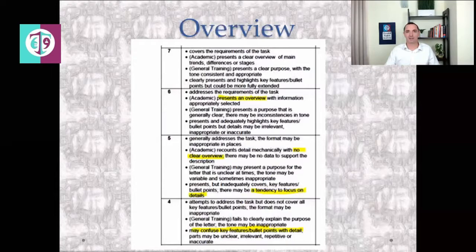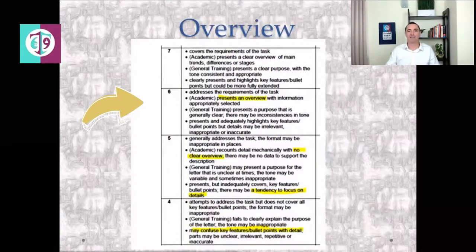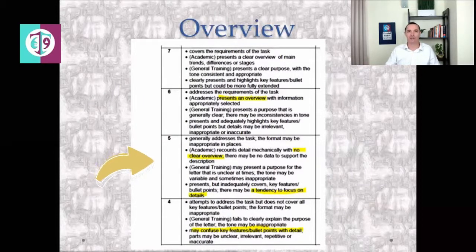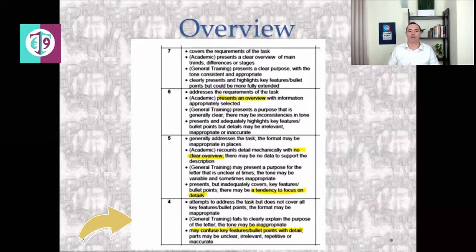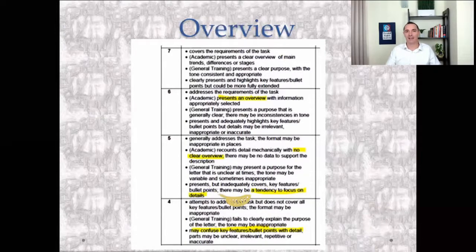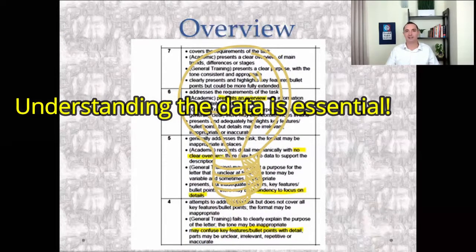Just back to the band descriptors quickly. We can see that for the band 6, it presents a clear overview. Band 5, no clear overview, and tendency to focus on details. And band 4, confusing a key feature with an overview, inaccurate data, generally not really understanding the main point. So we want to make sure we avoid that, of course. Understanding the data, really understanding it is key.